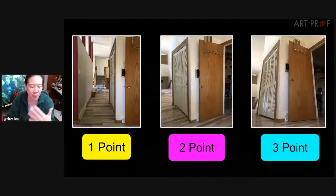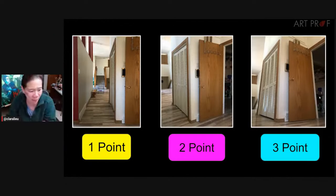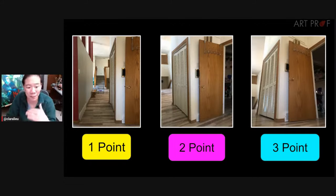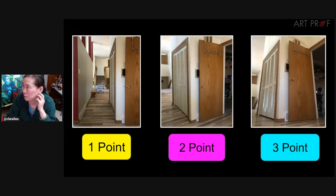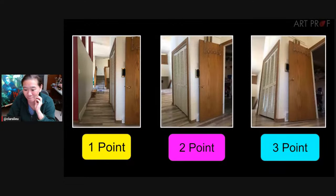Once you start putting in vanishing lines and break down the diagram, of course there's more. But two-point to three-point is not that big of a leap. I think it feels that way because people make it way too complicated, and it really doesn't have to be that way.